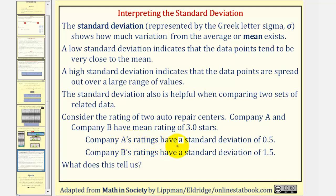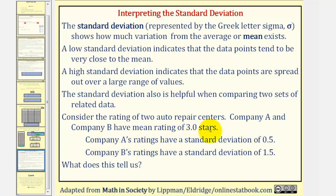Company A's smaller standard deviation means more ratings are close to the mean of 3 stars. For Company B, more people gave higher and lower ratings than 3 stars, while more of Company A's ratings were close to the average of 3 stars. I hope you found this lesson helpful.